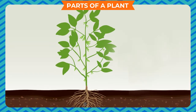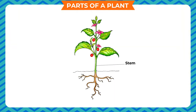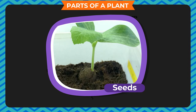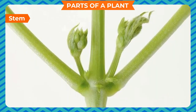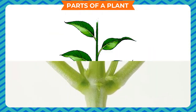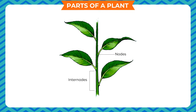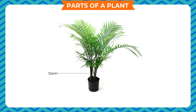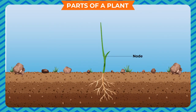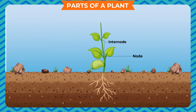The portion of the plant above the soil is called the shoot system. It mainly consists of the stem, branches, flowers, leaves, fruits, and seeds. The main axis of the plant is formed by the stem. Stem has two divisions: nodes and internodes. The stem supports branches and other parts of the plant. The node is the place from where branches and leaves arise, while the internode is the portion of the stem between two nodes.